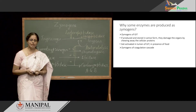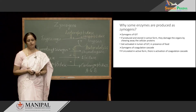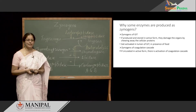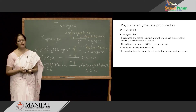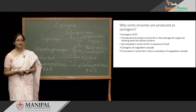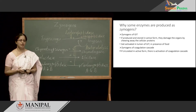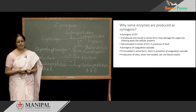Considering the Zymogens of the coagulation pathway — if they are circulated in active form, this would be responsible for producing clots, activating the coagulation pathway and producing clots. This production of clots is very damaging to the system whenever it is unnecessary.